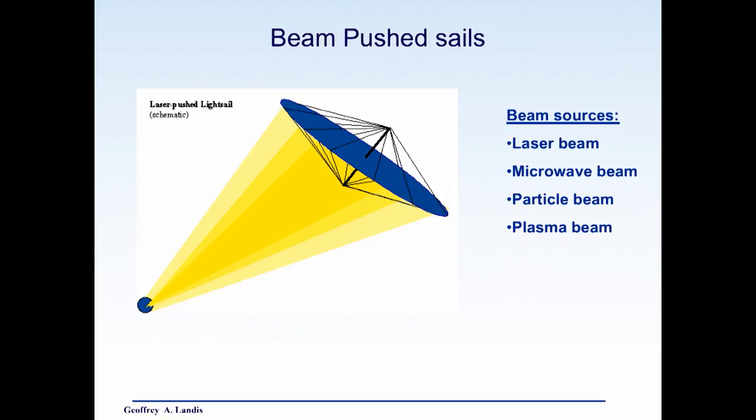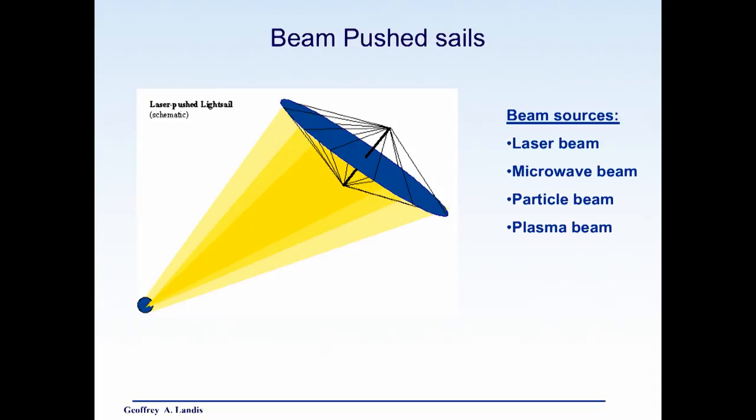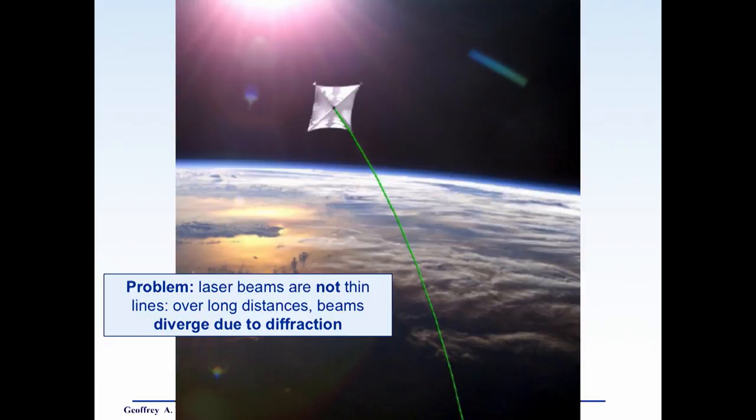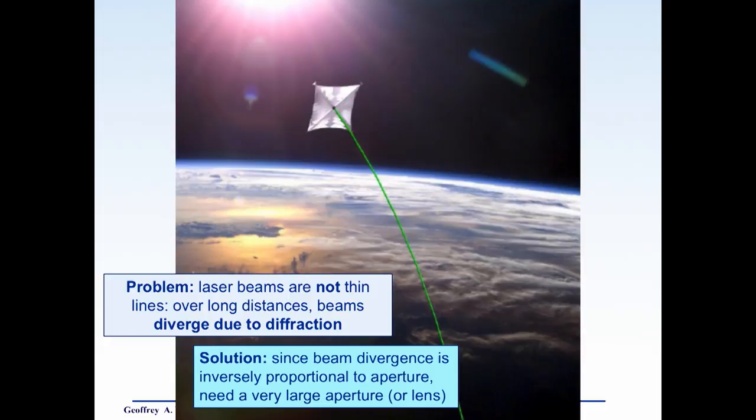So let's hold on to that thought of magnetic fields for a moment. Let's go back to ordinary sails. We could push the sail. The problem, of course, with the sailing to the stars is that the sunlight goes away as one over r squared as you get far from the sun. But let's push it. We know how to make laser beams. There's other possibilities I'll talk about in a second. Microwave beams, particle beams, plasma beams, but let's look at laser beams. We could push the sail with a laser beam. Problem is, laser beams are not thin lines like in the picture. Over long distances, they diverge due to diffraction.